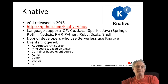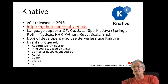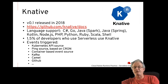Knative is an open-source community project which adds components for deploying, running, and managing serverless cloud-native applications on Kubernetes. Version 0.1 was released in 2018. Red Hat Serverless became generally available in April 2020 with OpenShift 4.4. Knative has extensive language support — essentially anything that can run in a container can run as Knative. Around 1.5% of developers said they use Knative. It offers a wide range of triggers, specifically Kafka and sync sources, and portability is a key focus — whether on-premise, in the cloud, or in a third-party data centre.